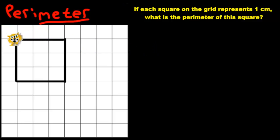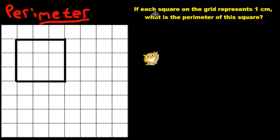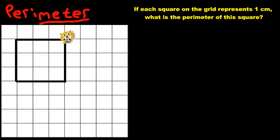I've got a guest here — a kitty cat. And the kitty cat is going to go all the way around this object. But before we do that, let's read the question. It says: if each square on the grid represents one centimeter, what is the perimeter of this square? So we're going to go all around this square and see how far we went. If the kitty cat starts over here and crosses three squares, that means it went three centimeters. So let's write three centimeters in.